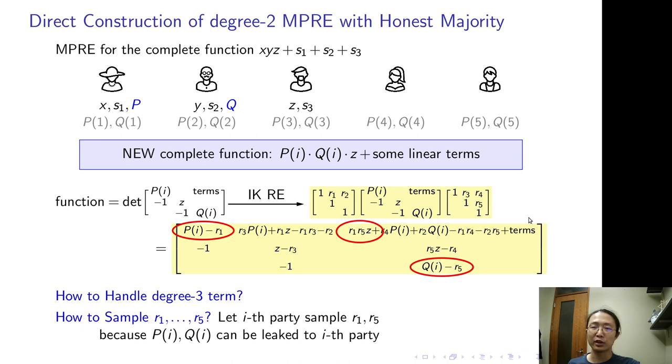More formally, the only concern of letting the i-th party sample R1, R5 is that when he is corrupted by the adversary, the adversary will learn R1, R5. But this is actually not a concern, because if the adversary corrupts the i-th party, it will get P(i), Q(i) for free as the leakage. The adversary also learns P(i) minus R1 and Q(i) minus R5 from the encoding. So it can compute R1, R5 by itself.